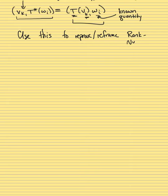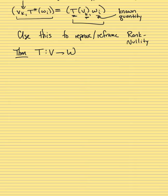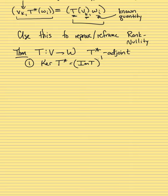We originally proved rank-nullity essentially by doing reduced row operations — row and column operations to compare various dimensions of vector spaces. Using the language of inner products, we get a little bit more. The first claim is: the kernel of T* equals the orthogonal complement of the image of T. Similarly, the kernel of T equals the orthogonal complement of the image of T*.